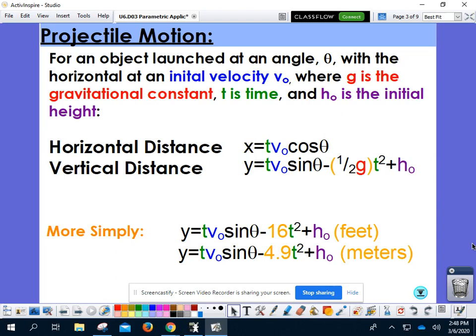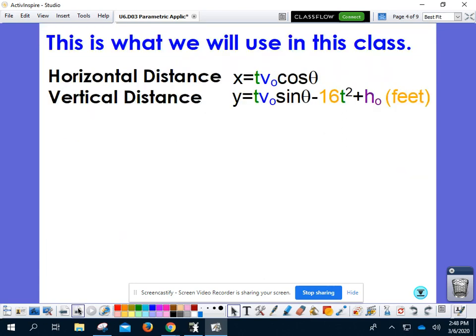Then we know that with our gravitational constant, 32 would be the gravitational constant for feet, so half of that is 16. The gravitational constant for meters would be 9.8, so half of that is 4.5 meters. More simply put, this is really the equation that you need to know for our class. We don't do too much in meters, we keep things in feet, and so that negative 16t squared will be the value that is relevant to you.